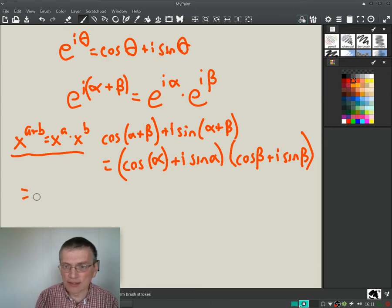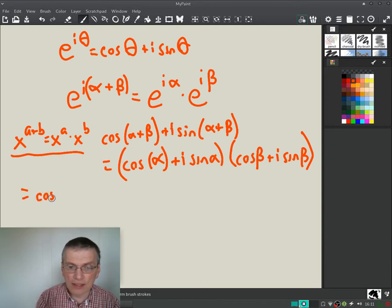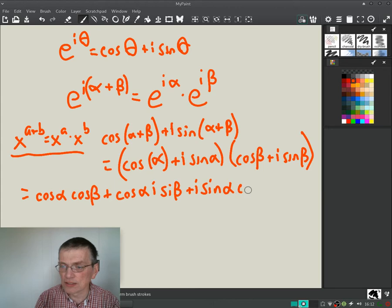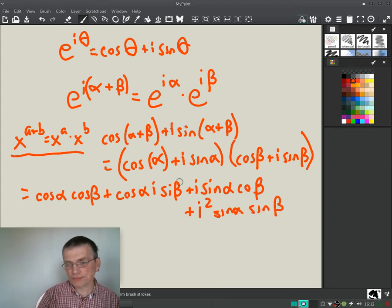And so we get, bear with me here, so we'll use our FOIL rules. We get cosine alpha cosine beta. That's the first. The outer ones are cosine alpha i sine beta. All right, the inner terms are plus i sine alpha cosine beta. And we get one last term, i times i, i squared, sine alpha sine beta.